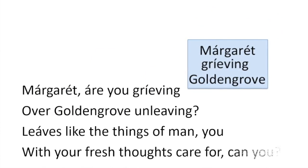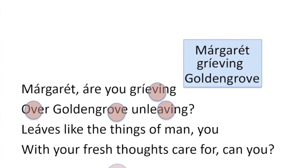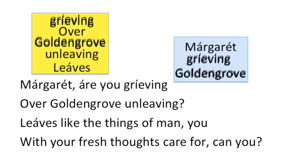He creates another group of words linked through the sound V: 'Margaret is grieving over golden grove, unleaving, leaves like the things of man.' There are two words that are doubly emphasised because they come into both groups — those words are 'grieving' and 'golden grove.'